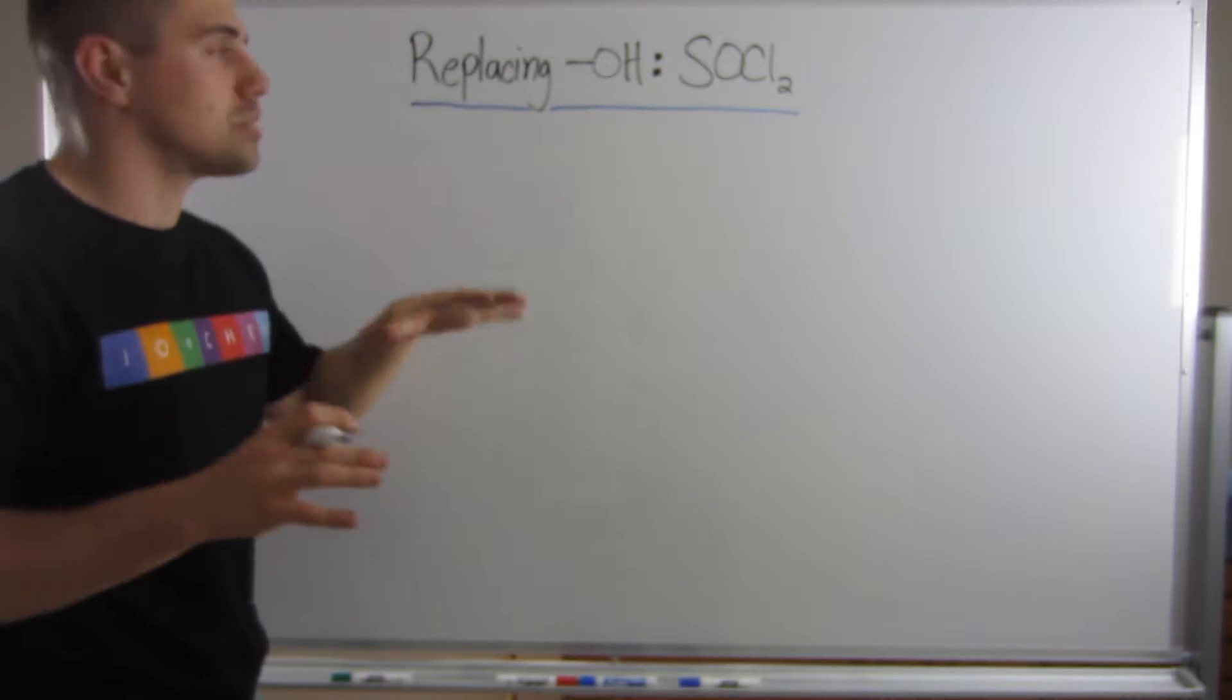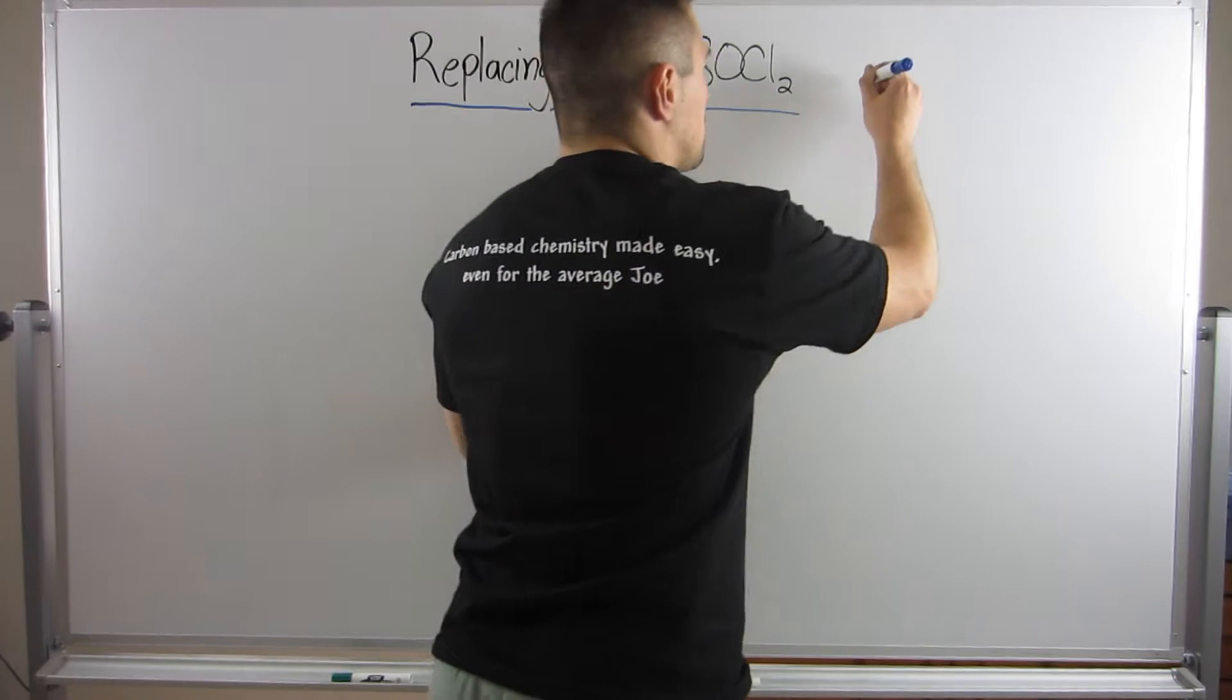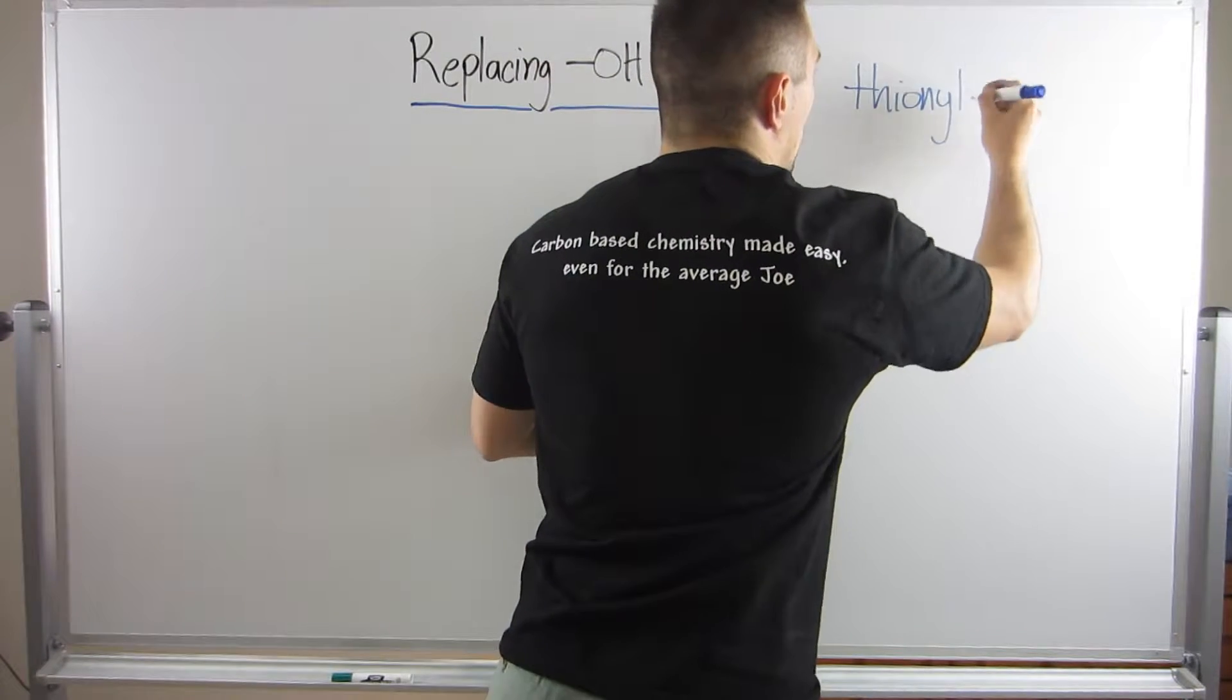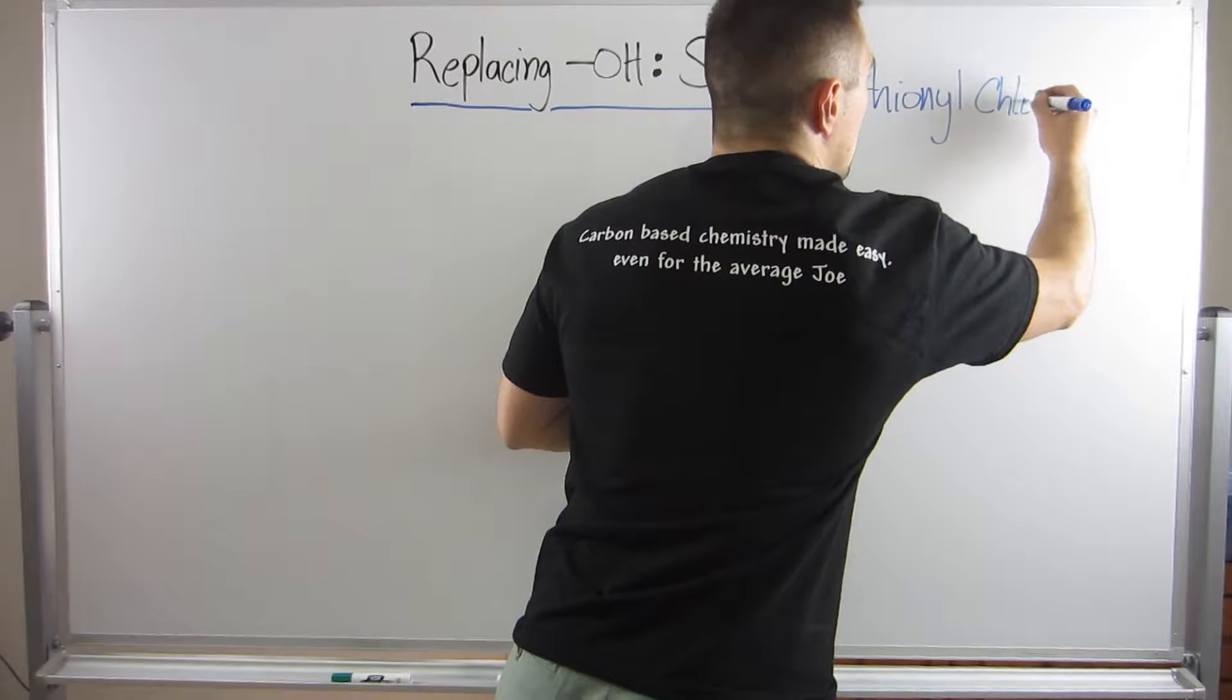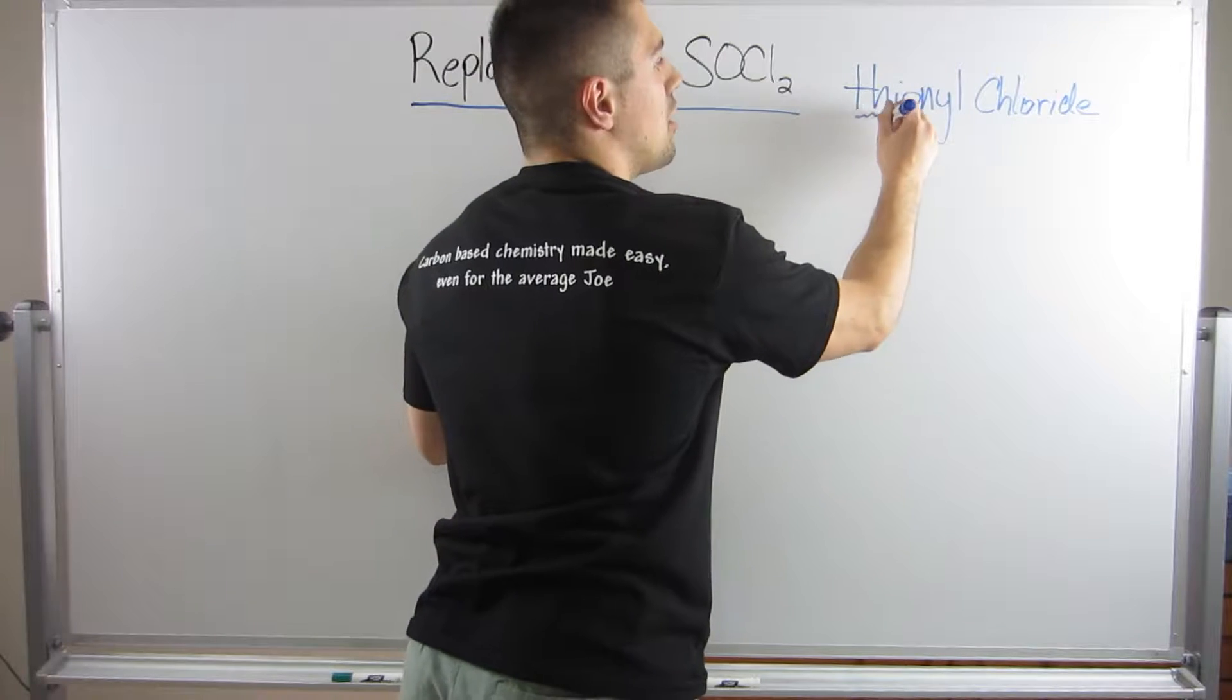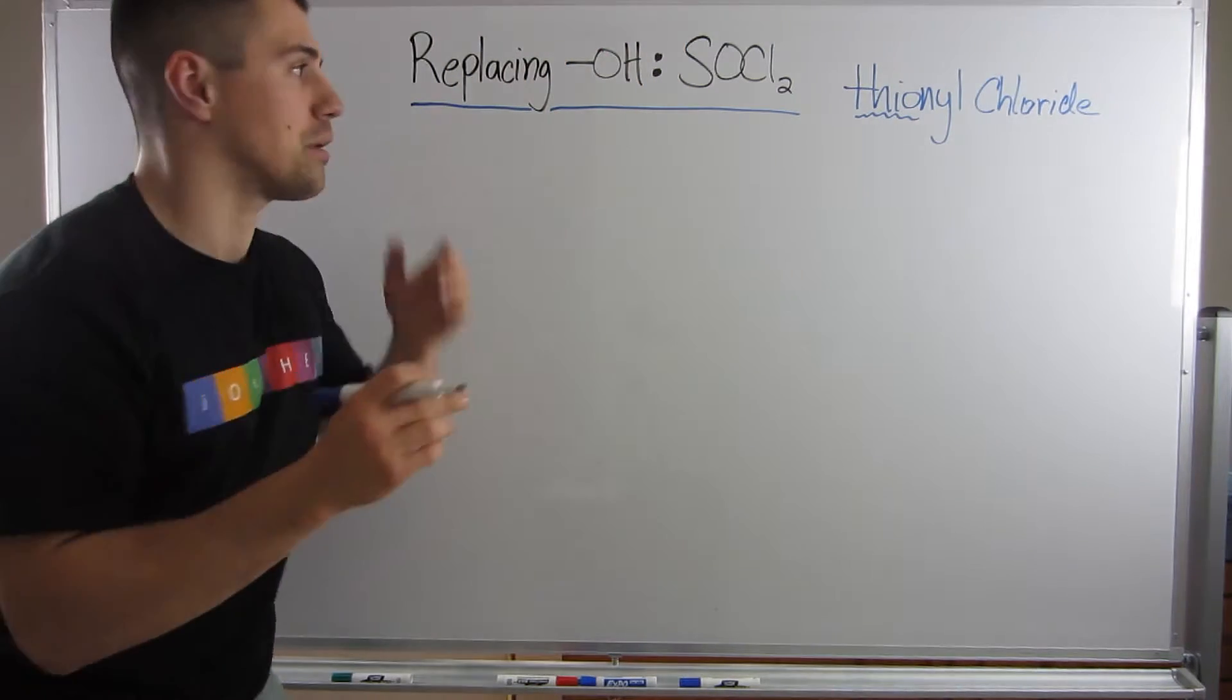In this video, we're going to be talking about using a reagent called SOCl2, and you're going to see this in O-Chem part 2, so I'm just going to drop its name right now. It's called thionyl chloride, and if you ever see anything with sulfur, you're probably going to see this thio prefix. It just means, hey, look at me, I have sulfur in the compound.